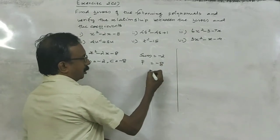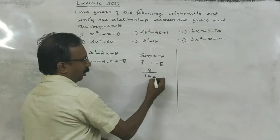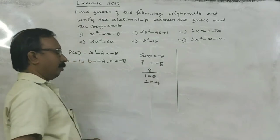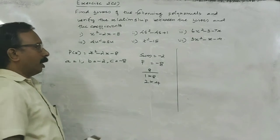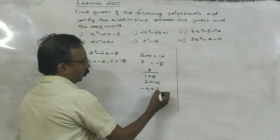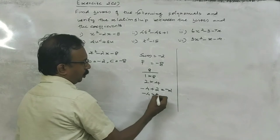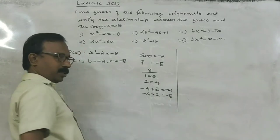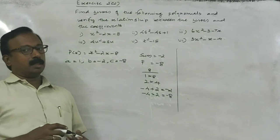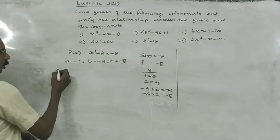To find the numbers, find the factors of 8: 1 into 8, 2 into 4. We have minus 4 plus 2 is minus 2, and minus 4 into 2 is minus 8 — isn't it? That we have studied in the video first.